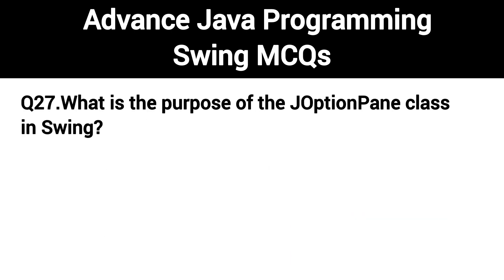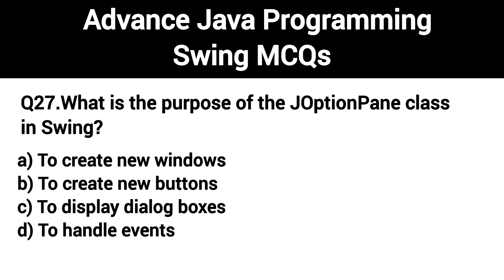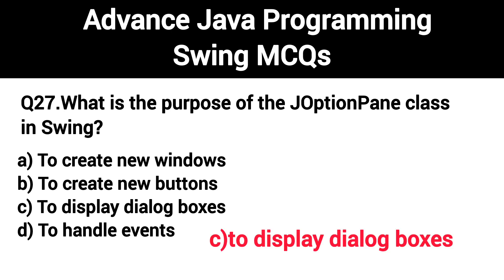Q27. What is the purpose of the JOptionPane class in Swing? The right answer is Option C: To display dialog boxes.